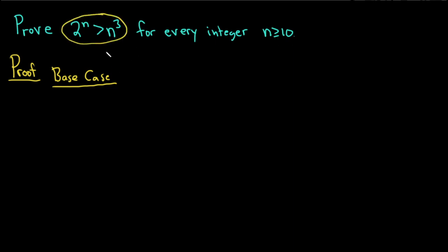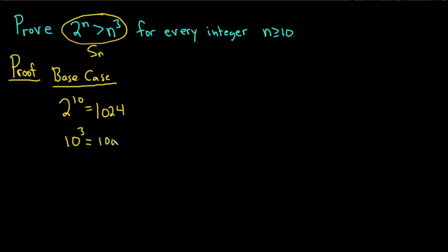This is our statement. If you want to give it a name, you can call it s sub n. In the base case, we have to verify that it's true when n equals 10. So all we have to do is plug in 10. 2 to the 10th is equal to 1024, and 10 cubed is equal to 1000. So we have that 2 to the 10 is bigger than 10 cubed, which means s sub 10 is true. So we have shown that the base case is true.